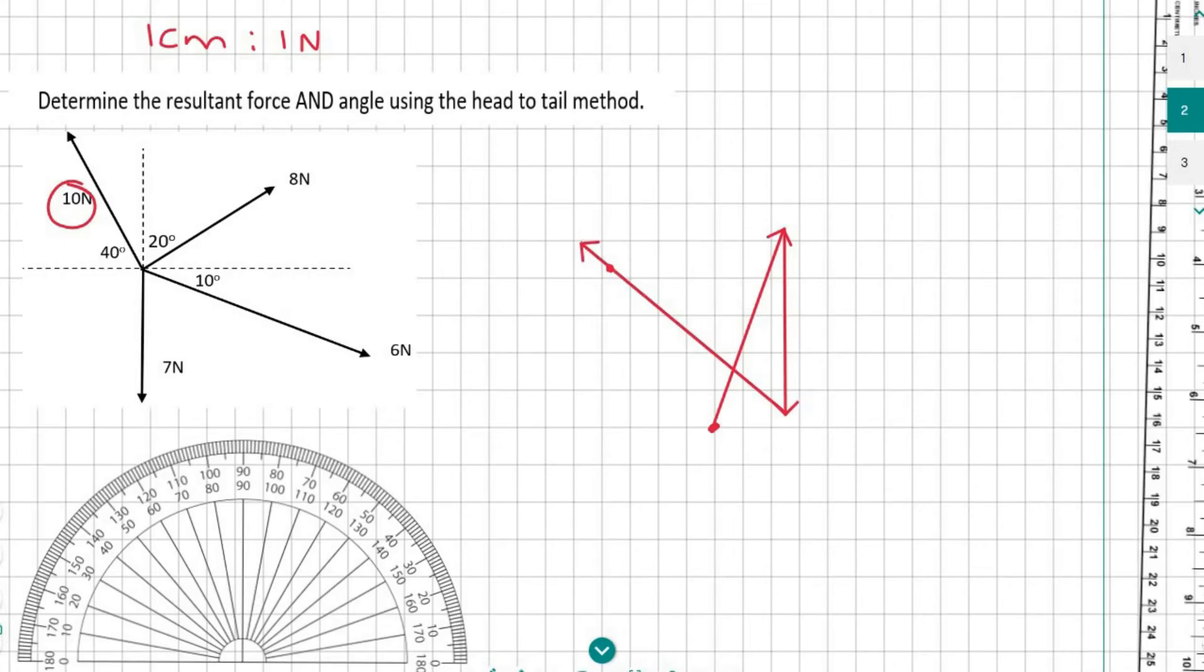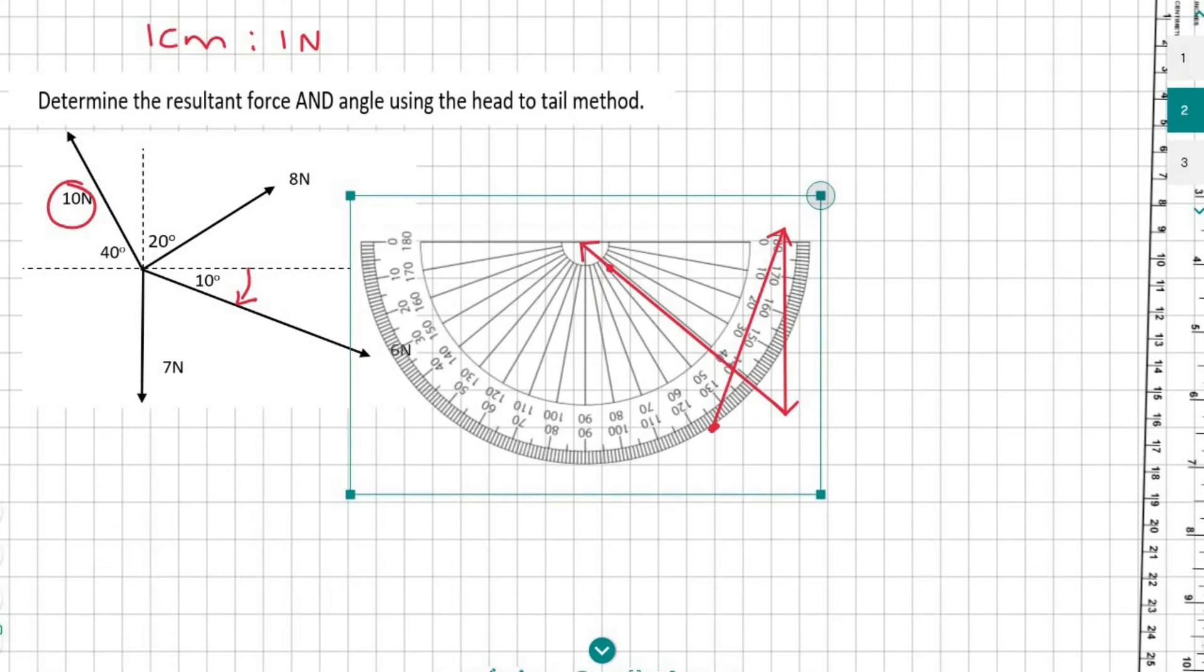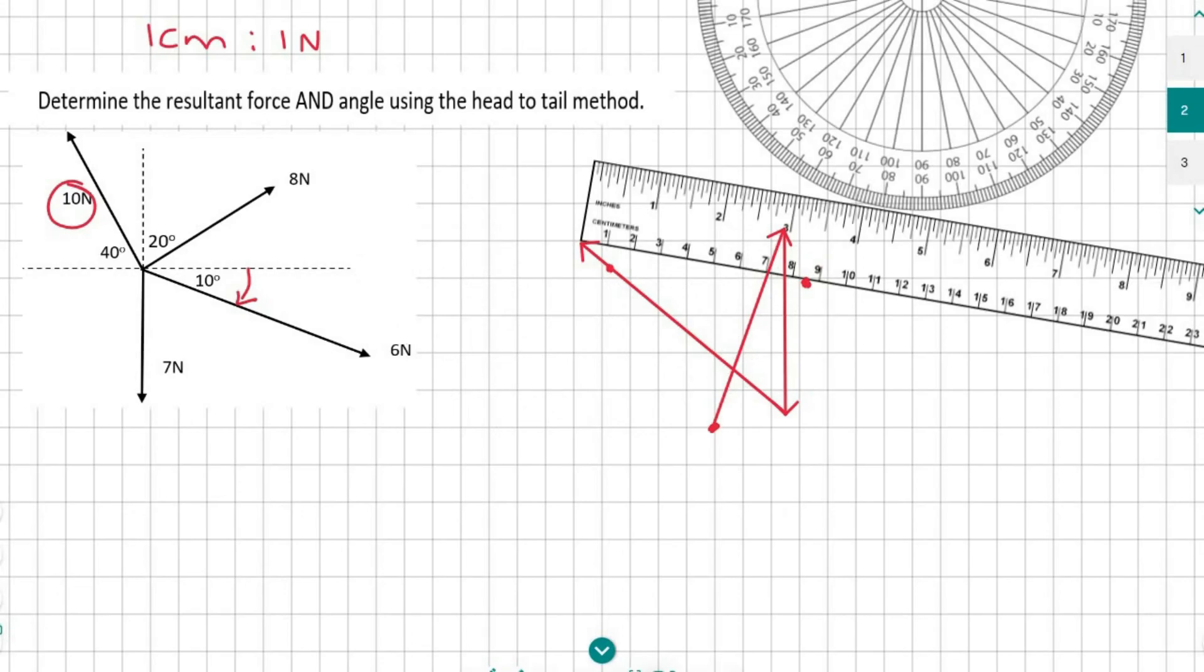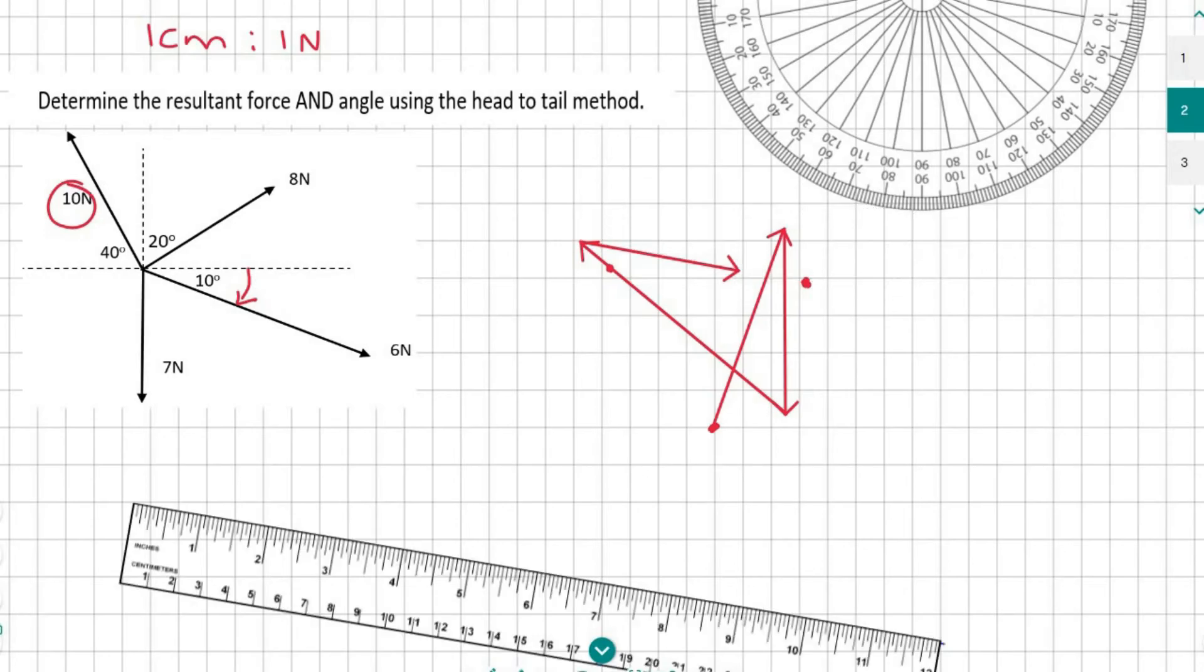Now, the only force we still have to do is the 6 newton force. That 6 newton force is measured at 10 degrees going down. I'm going to put my protractor upside down and place it at the last place we just finished. Now I'm going to measure 10 degrees going down, which takes me over there. Then you can connect a 6 centimeter line to there. By the way, you might do this in a different order than me—the answer you get will still be the same.